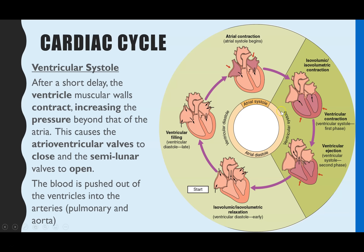The next stage is ventricular systole, shown by the darker green section. There is a short delay, and then the ventricles contract from the bottom upwards. Because the ventricles have a really thick muscular wall, you get a big contraction causing a decrease in ventricular volume and a large increase in pressure. That forces the atrioventricular valves shut and the semilunar valves open, so blood moves from the ventricles up through the pulmonary artery and the aorta. Then all the muscle relaxes and blood re-enters through the atria, completing the cycle.